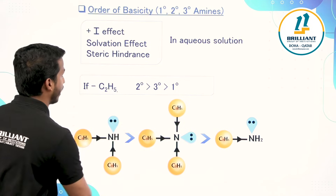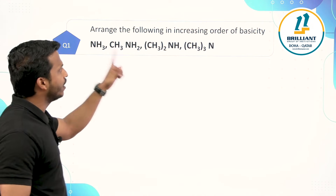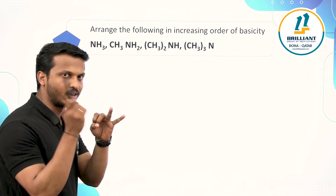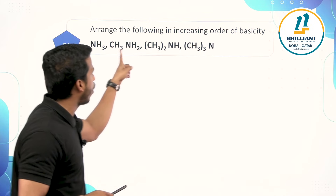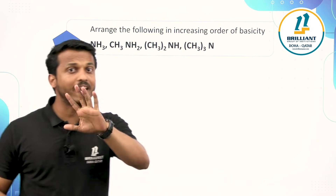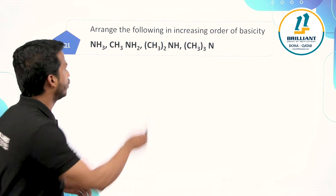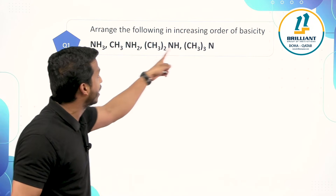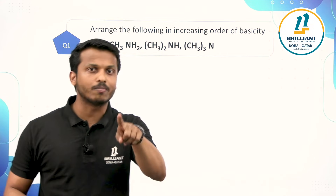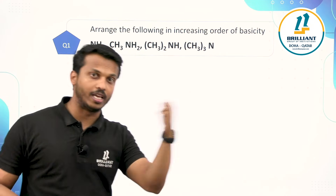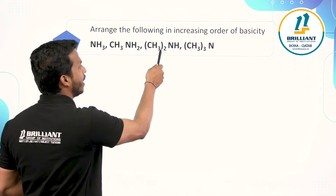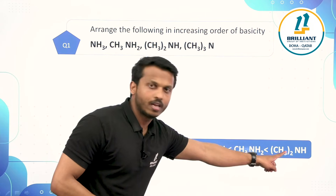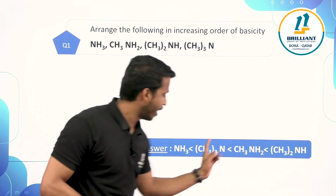Let's crack some questions. Question 1: Arrange the following in increasing order of basicity. First classify them — ammonia is there, and the rest are all aliphatic amines with methyl groups. Aliphatic amines are more basic than ammonia, so ammonia is least basic among all. The alkyl group is methyl, so the order among the amines is: secondary > primary > tertiary. Therefore the full order from least to most basic is: ammonia < tertiary < primary < secondary.